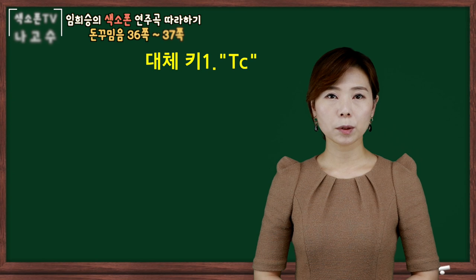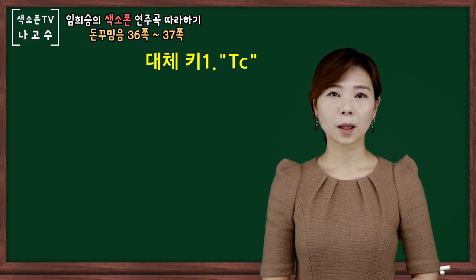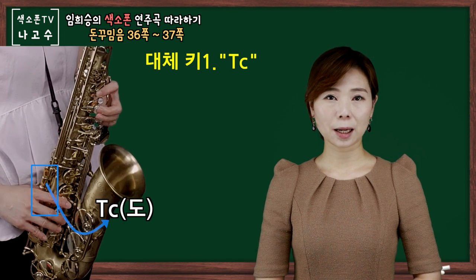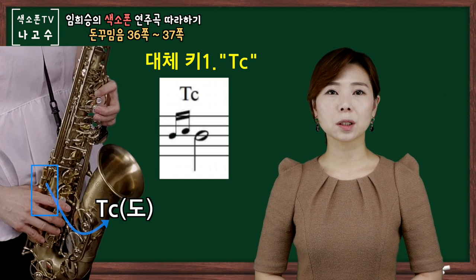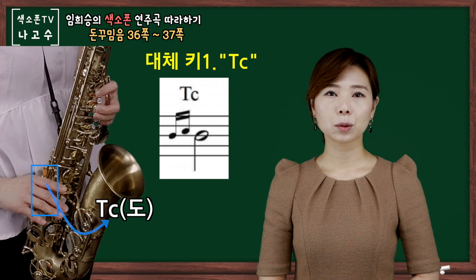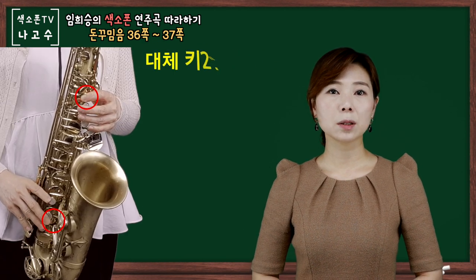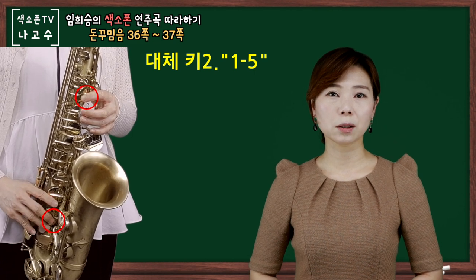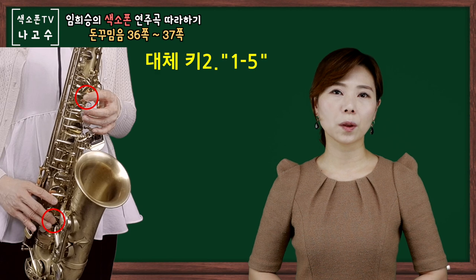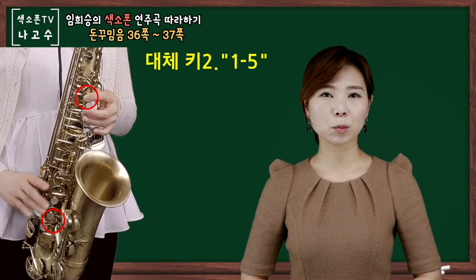돈 꾸밈음 연습할 때 대체 키를 간단하게 살펴보도록 하겠습니다. C 메이저에서 C, 도, C, 라♯, C 이 부분을 살펴보면, C와 C 사이에 있는 도는 T, C키를 이용하여서 운지하시면 되겠습니다. 라♯은 왼손 C 1번 손가락을 누르고 있는 상태에서 오른손 아래 5번 손가락을 눌렀다가 떼주시면 되겠습니다.